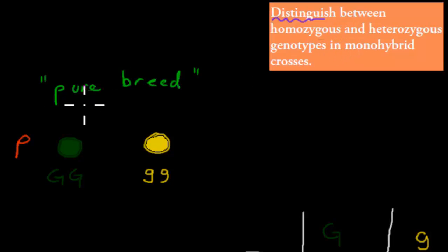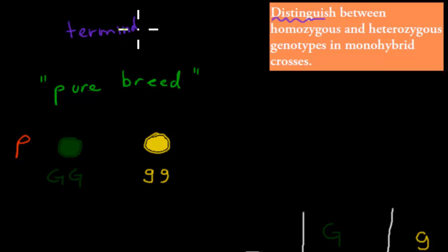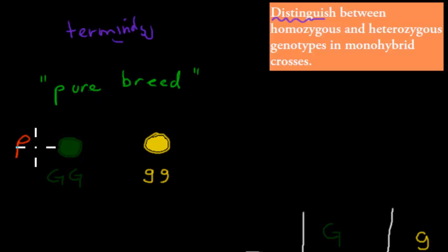First I'm going to talk about what we've been discussing so far in terms of the terminology — what we call things. For example, we have the parent generation and they're the pure breeds.